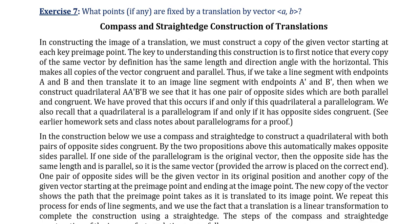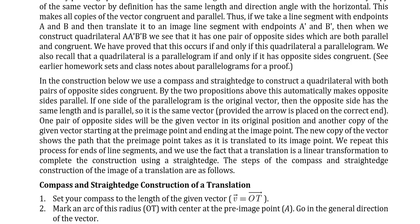In the construction below, we're going to use this compass and straight edge to construct a quadrilateral with both pairs of opposite sides congruent. By the two propositions above, this automatic makes the opposite sides parallel. If one side of the parallelogram is the original vector, then the opposite side has the same length as parallel, so it's the same vector. Pairs of opposite sides will be given in the vector in its original position. So I'm assuming here we've got one drawing of the vector somewhere, maybe totally unrelated to where it is in the pre-image set, but we've got one copy, and we can use that to map some points. Now, if we want to map a line segment, how many points are on the line segment? Well, they're infinitely many points, so how many times would you do this? Well, I guess technically infinitely many, but that's impractical. Impossible, actually.